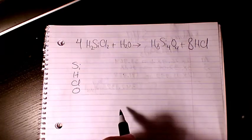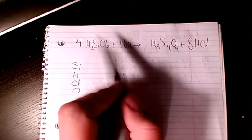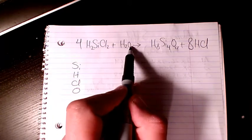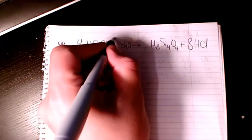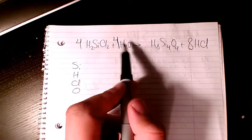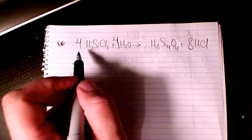Then let's check the oxygen. Oxygen: here we have four of them, and we have one — if you put four here that's going to balance it, four and four.